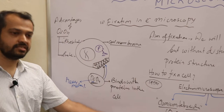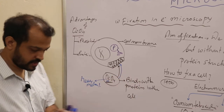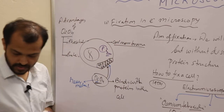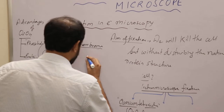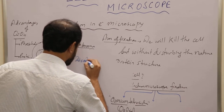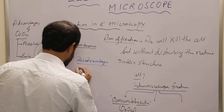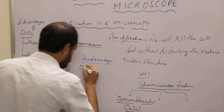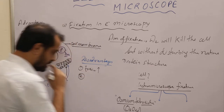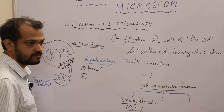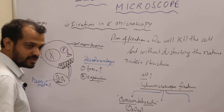If we talk about the disadvantages of osmium tetroxide, there are many. Number one: it is highly toxic for humans. Number two: it is highly expensive for labs.